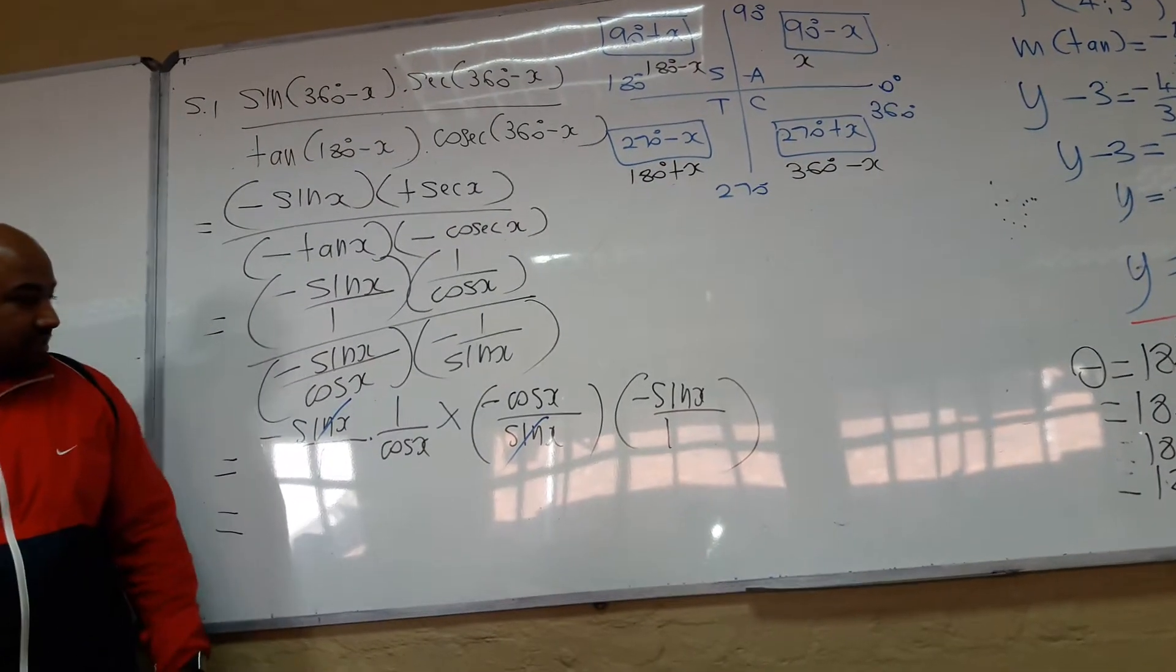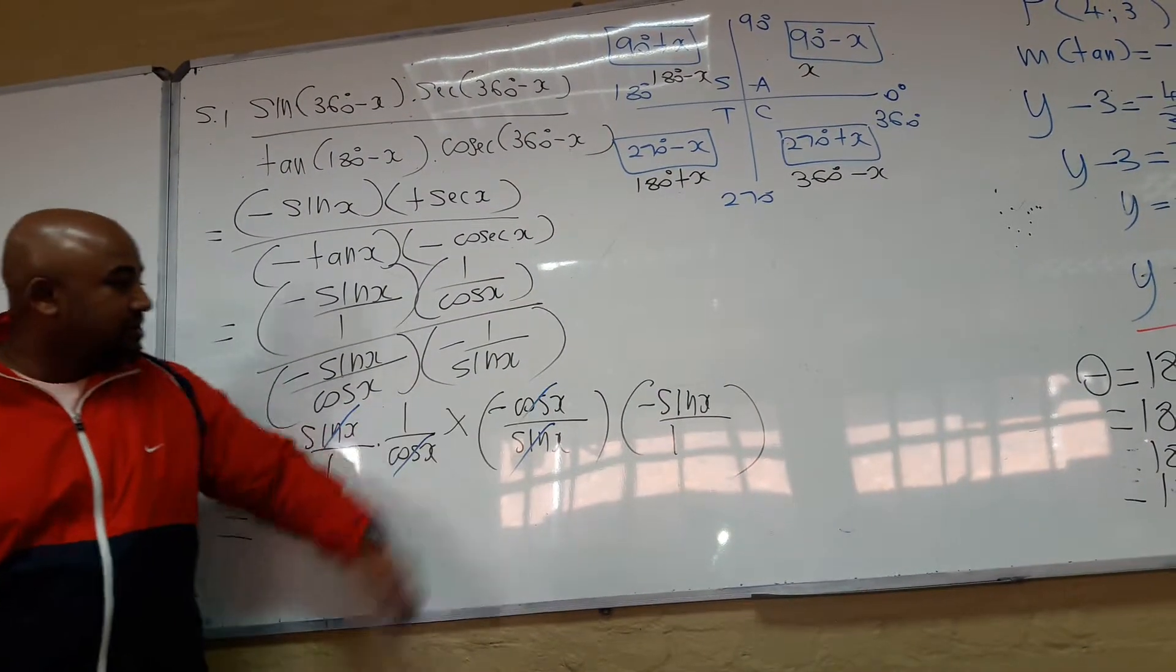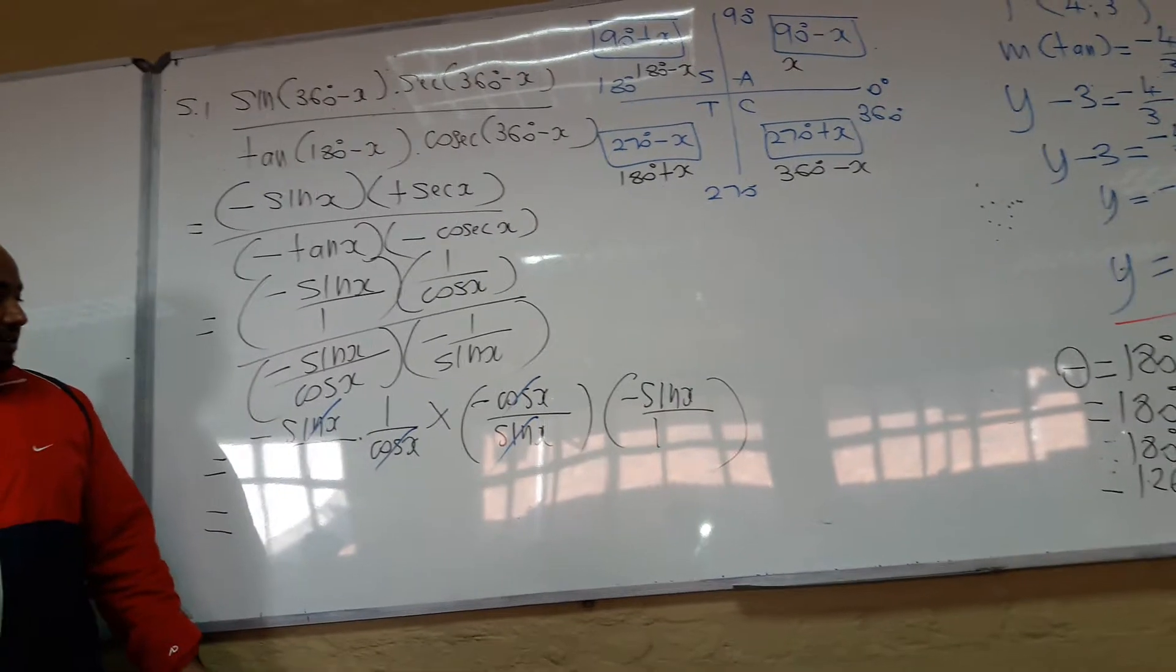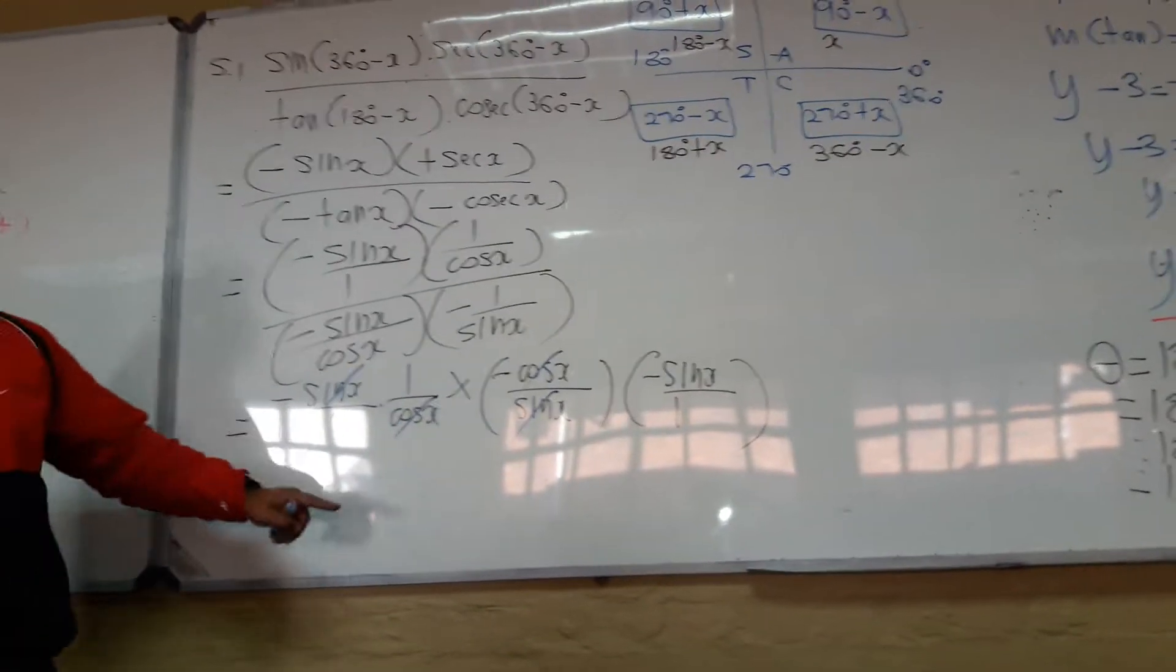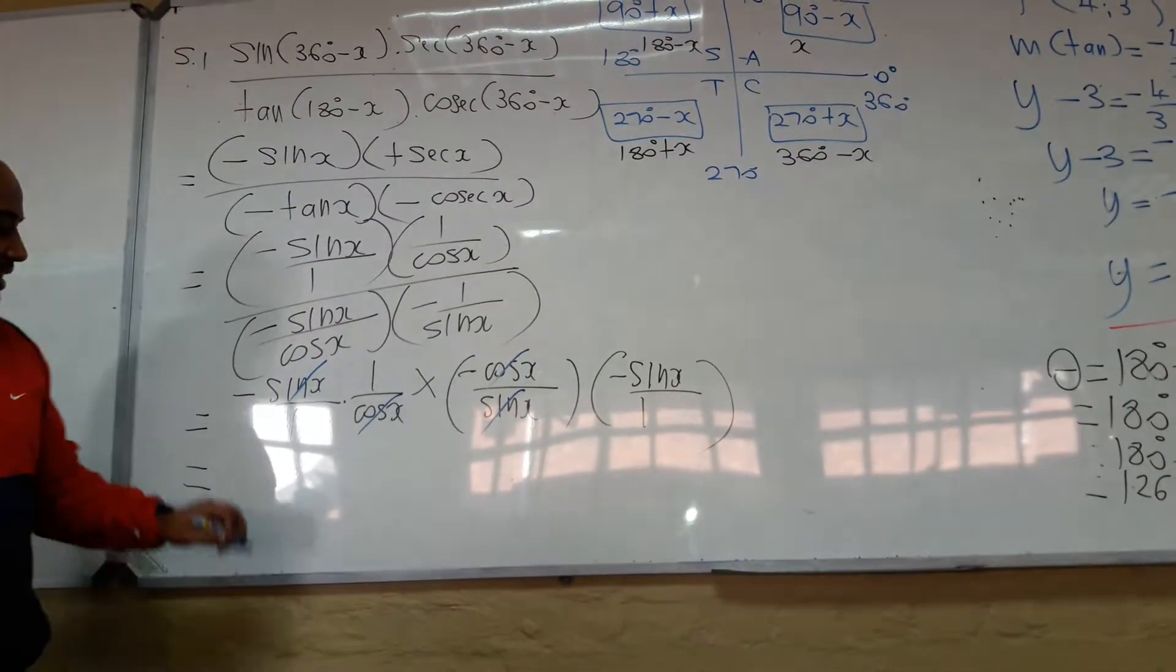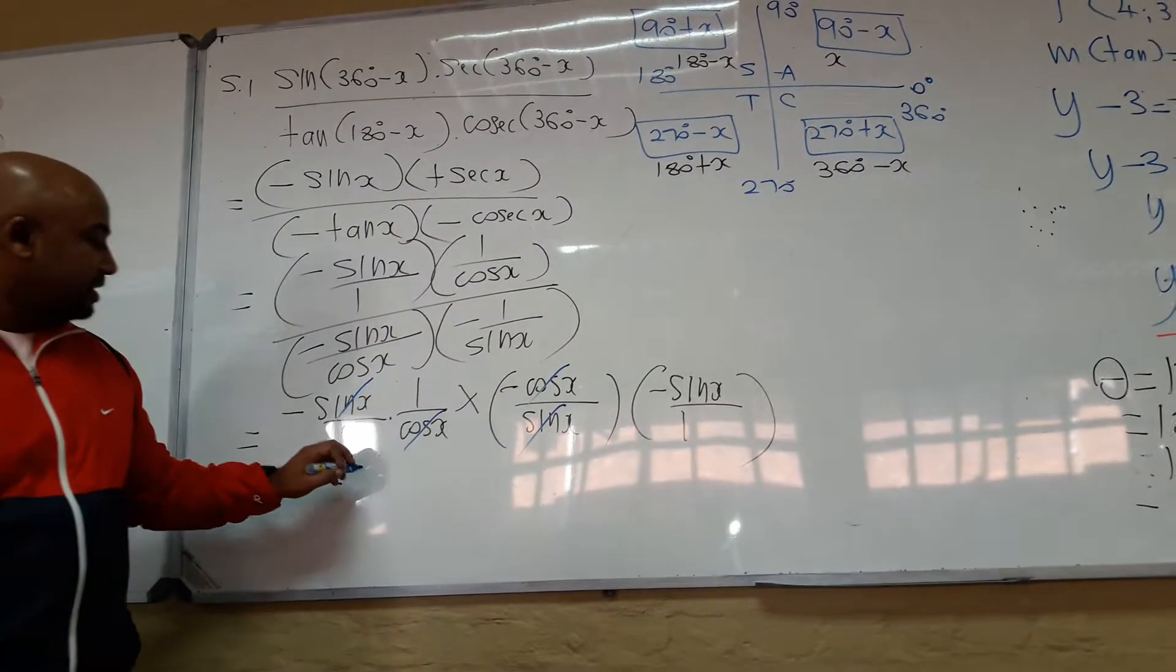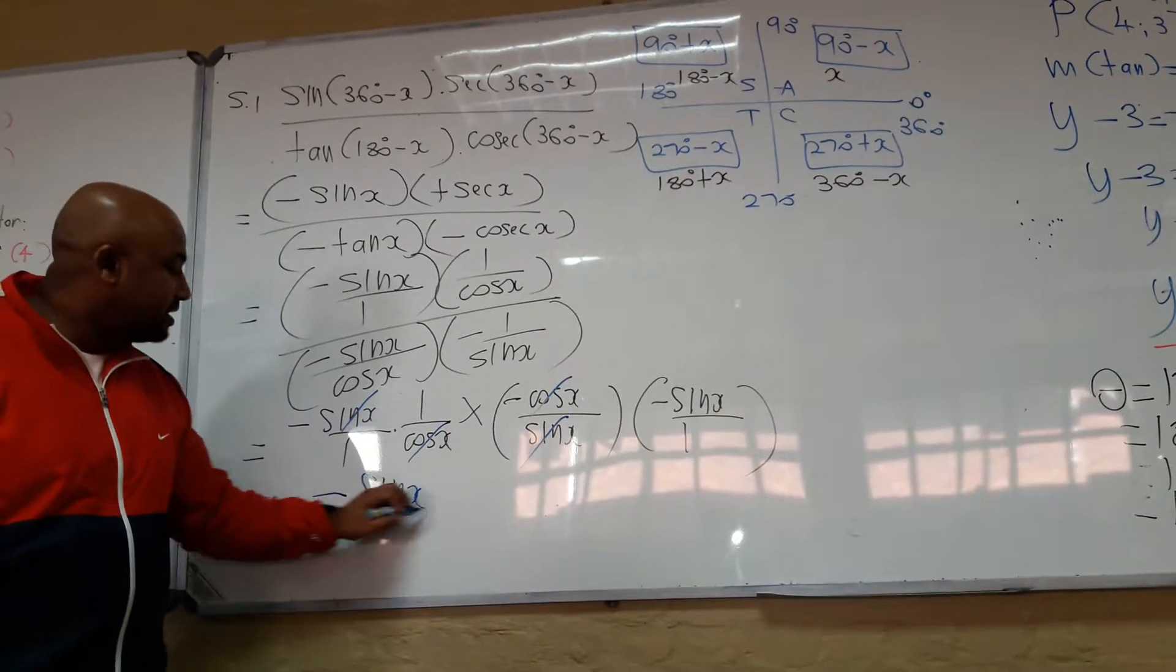Anything else? Cosine and cosine. Cosine and cosine. Is that all? Yes. Okay, so now, we've got a negative times a negative times a negative, which is negative. And we just left with sine. Sine x.